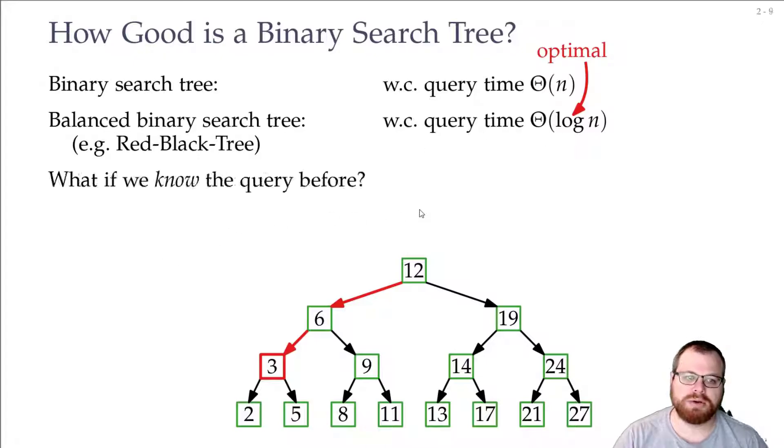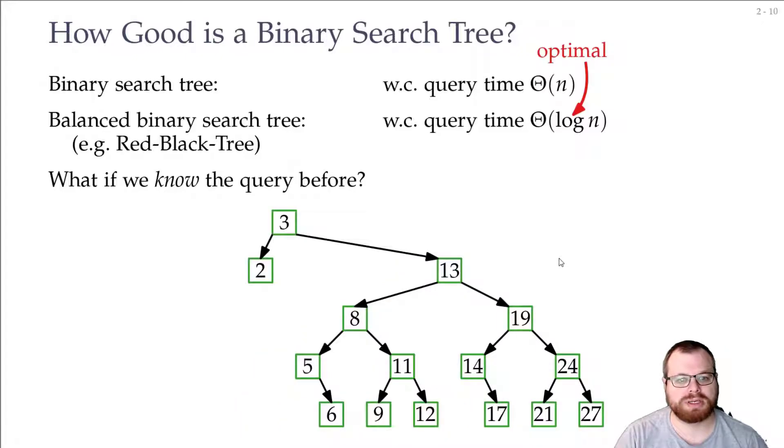But what if we know the input before? Well, if I know before I built the tree that I will look for a three, then it's quite easy. I just put the three at the root and now my query takes only constant time.